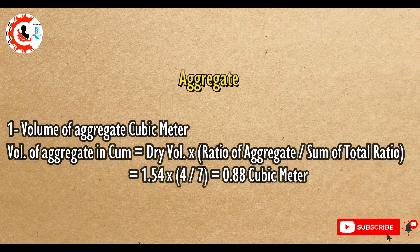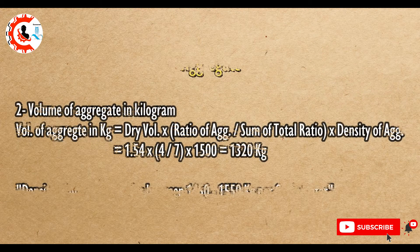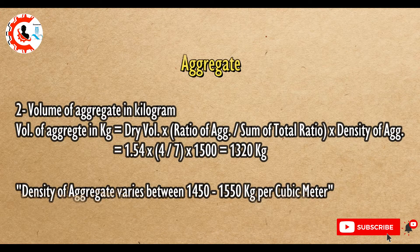Aggregate. Volume of aggregate in cubic meter equals dry volume multiplied by ratio of aggregate divided by sum of total ratio, multiplied by density of aggregate.